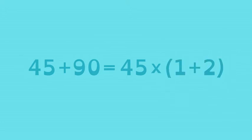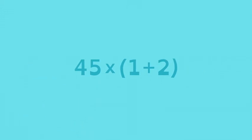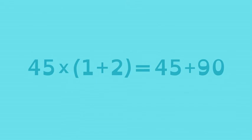One doesn't count as the greatest common factor, since it's the common factor of all numbers. Notice that if you apply the distributive property to the expression 45 times the quantity 1 plus 2, you get 45 plus 90.